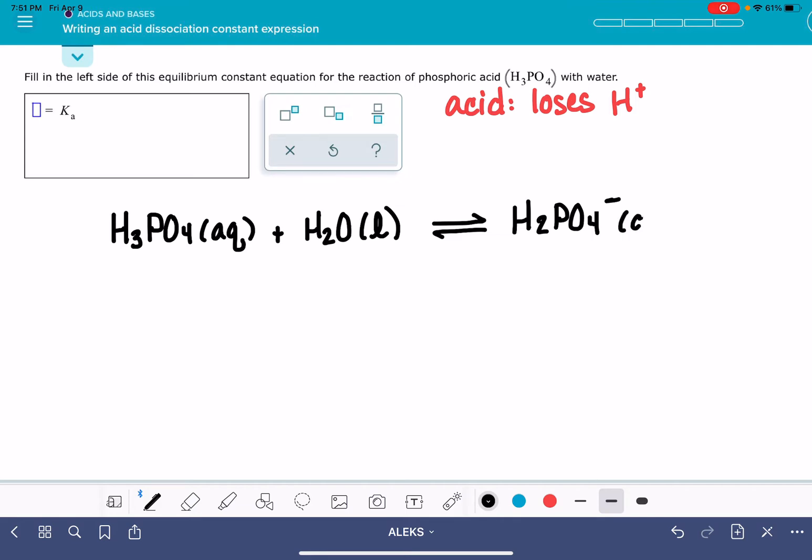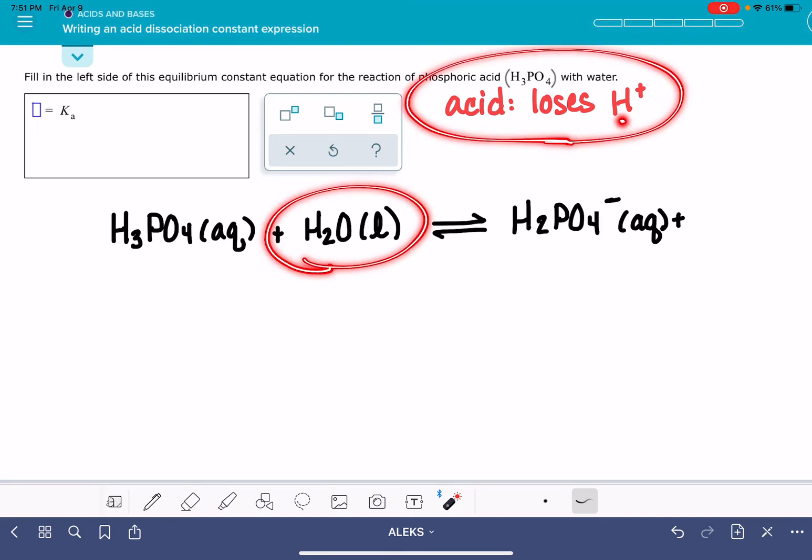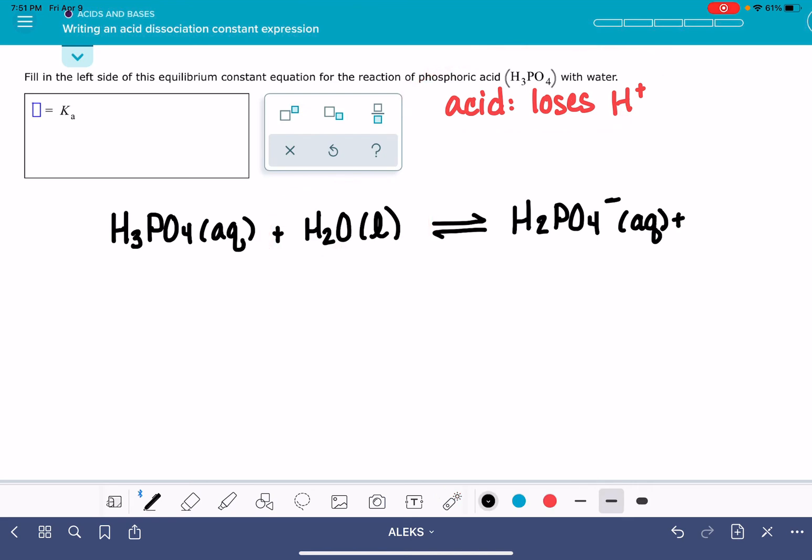So we're making H2PO4-, and this is also aqueous. The H-plus that is being lost by the acid is being picked up by the water molecule. The water molecule is the base. So that means the water molecule is gaining the H-plus ion. So instead of two hydrogens, now it has three hydrogens. And instead of being neutral, it now has a positive charge. This is aqueous as well.